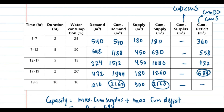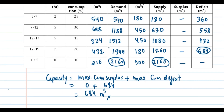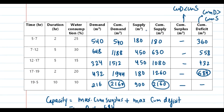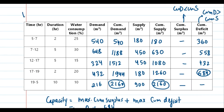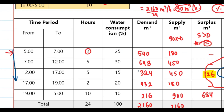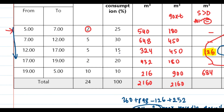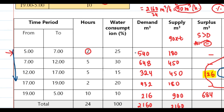We have solved this numerical using both methods and got the same answer: 684 meter cube. If you want fewer calculations, Method 1 is preferable; for more systematic calculation, Method 2 is best. Thank you for watching.